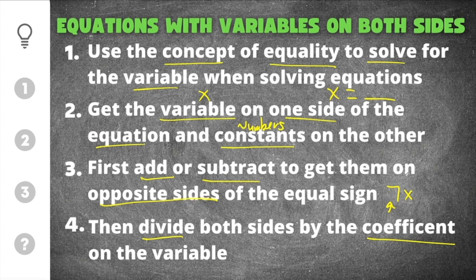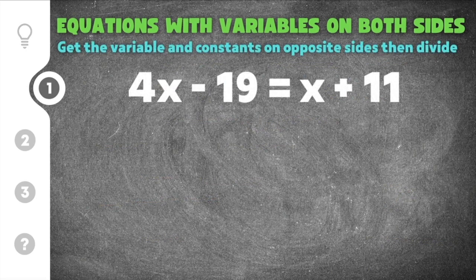Let's get started on our first practice problem about equations with variables on both sides. The first practice problem gives us 4x minus 19 equals x plus 11. The first thing we have to do is get all the variables on one side, and then get all the constants on the other side. The way we're going to do that is we're going to use the concept of equality.